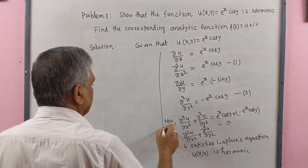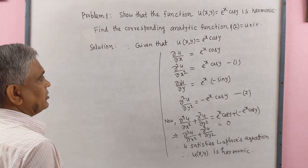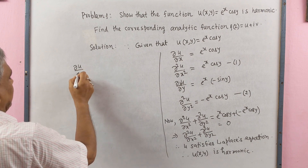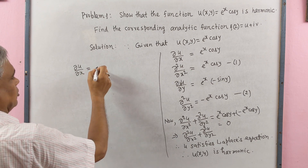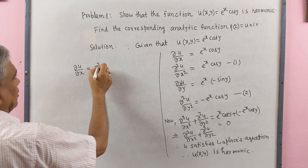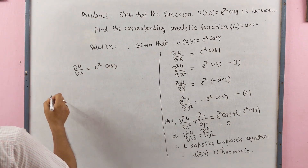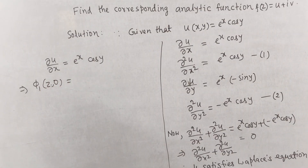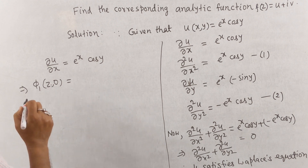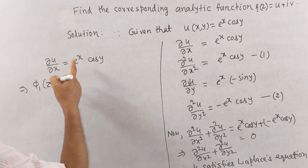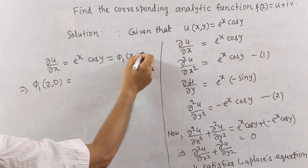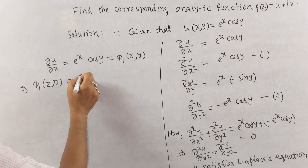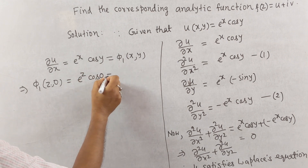Now we have to find the analytic function f(z) = u + iv. We use the Milne-Thompson method. We have ∂u/∂x = eˣ cos y, so φ₁(x,y) = eˣ cos y. Substituting x = z and y = 0: φ₁(z, 0) = eᶻ cos 0 = eᶻ.